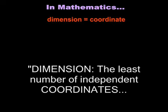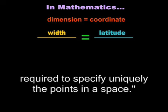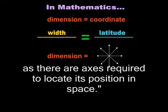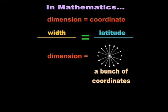Dimension: the least number of independent coordinates required to specify uniquely the points in the space. An object is said to have as many dimensions as there are axes required to locate its position in space.